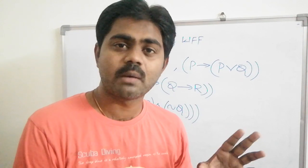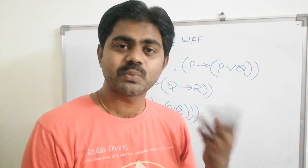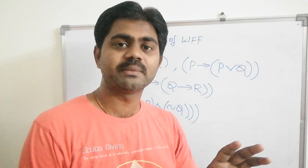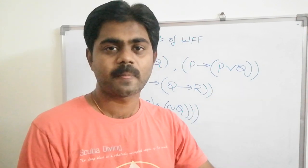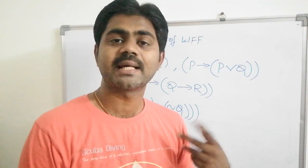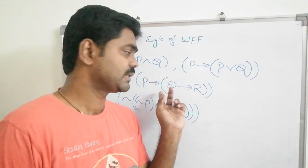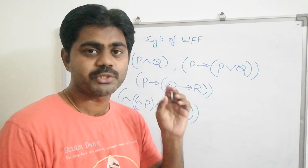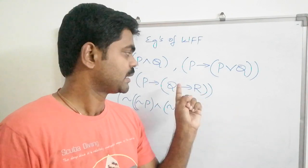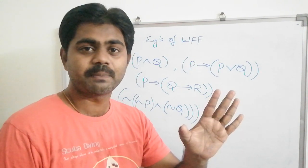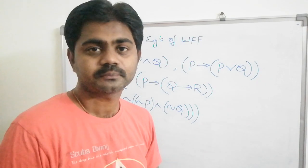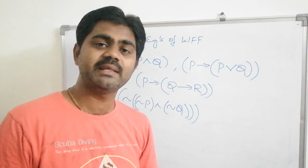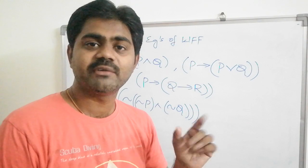Once we know well formed formulas, exams may ask you to construct a truth table for a given WFF. For example, take P implies (Q implies R). First, identify the variables: P, Q, and R — three variables. Then build the truth table with columns for P, Q, R, then Q implies R, then P implies (Q implies R) to get the final value. The key is always knowing how many variables are in your well formed formula.